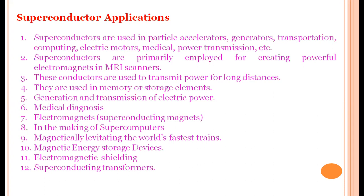Superconductors are used in medical technologies like MRI, and to produce superconductive magnets — that is, very strong magnets. They are used in the making of supercomputers. As we know, in Japan, bullet trains use the principle of the Meissner effect. There is a repulsive force between the track and the wheel, which reduces frictional force and increases the speed of the train. Another application is magnetic energy storage devices, electromagnetic shielding, and use in transformer preparation.